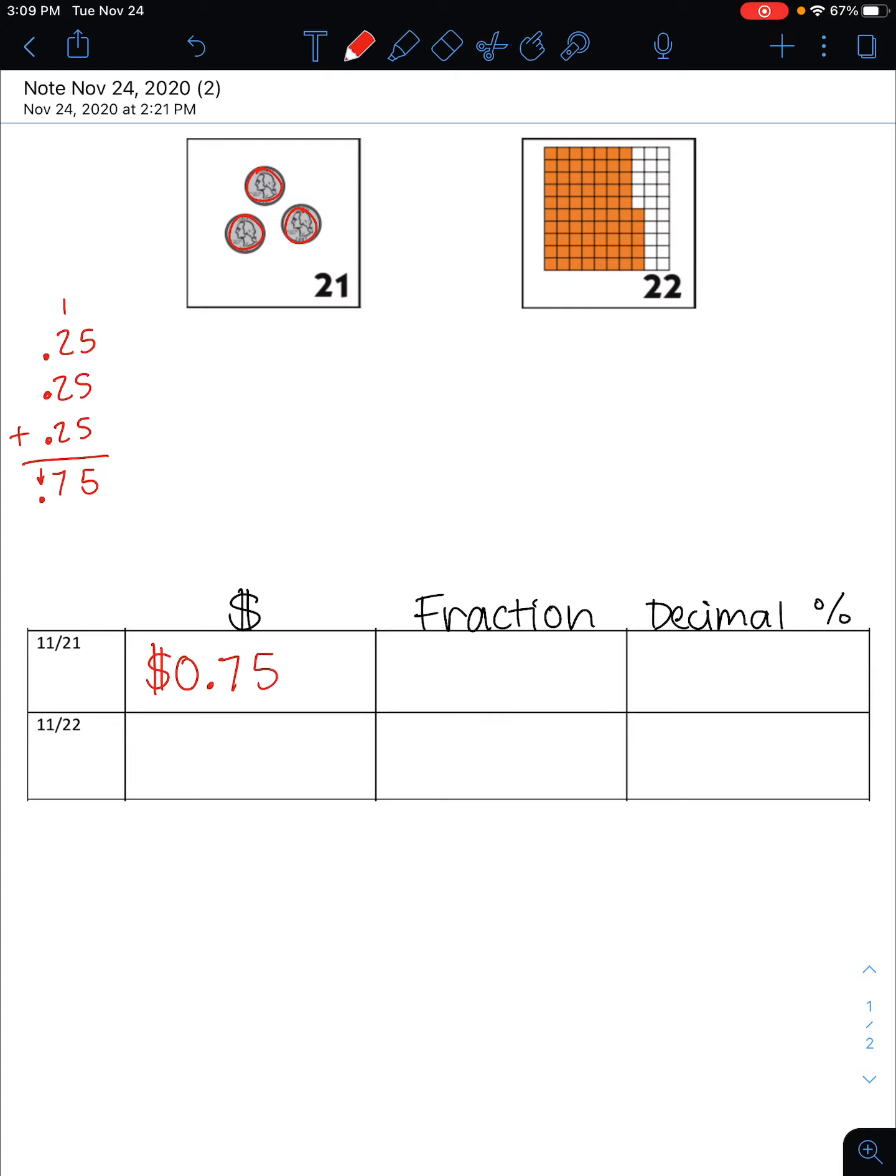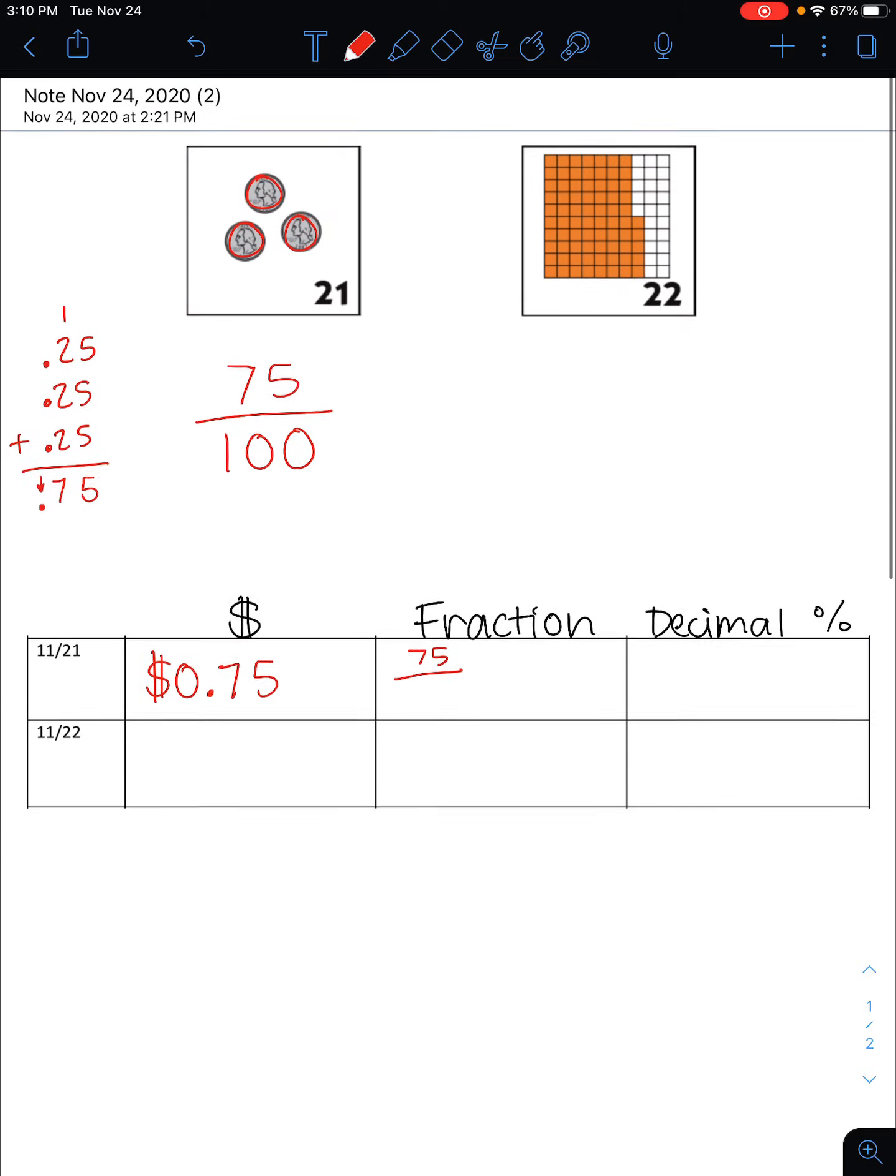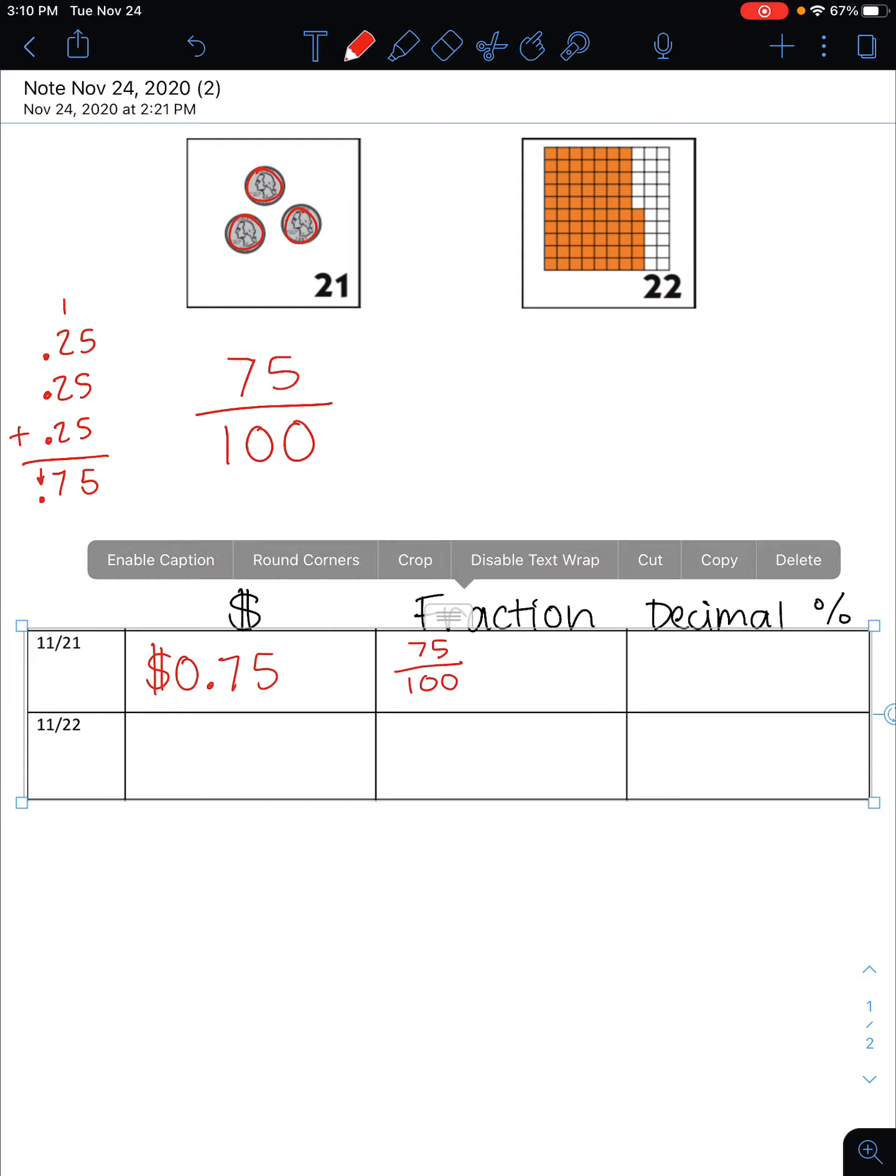If I think about money in a fraction form, I can think of it as 75 cents out of 100 total cents that make a dollar. This is the fraction format for this value: 75 hundredths.